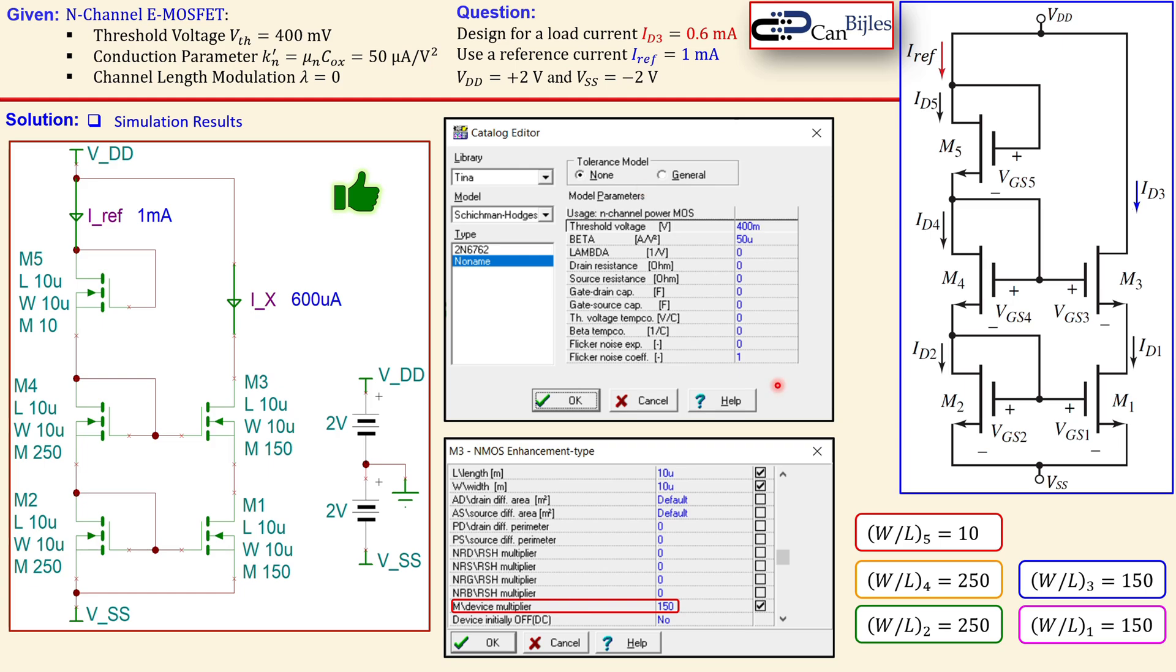All right this is our example number eight about the MOSFET current source design using this cascode configuration and also using only transistors to create this reference current relating that load current. If you have any questions comments about this example please let me know I will try to answer them as soon as possible. Don't forget to like and share these videos such that we can reach more people for these interesting topics. Thanks for your cooperation and see you next time in another video.